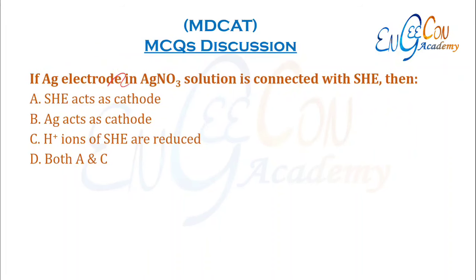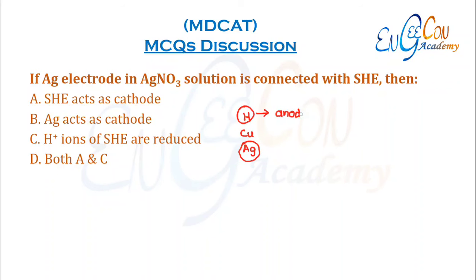If a silver electrode in silver nitrate solution is connected with a hydrogen electrode, looking at the reduction potentials, silver is below hydrogen. When the hydrogen electrode is connected with the silver electrode, hydrogen has greater oxidation potential. So hydrogen acts as the anode and silver acts as the cathode. B is the correct option.